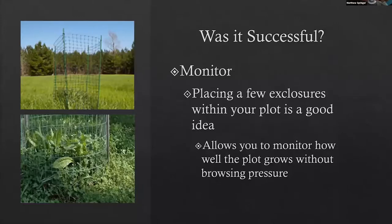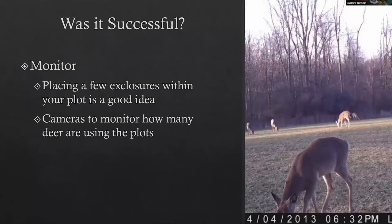How do you determine if your plot was successful? You want to monitor those plots, and the easiest way is through using exclosures, which let you know how much vegetation is actually growing in the plot without being eaten, and also how much is being eaten outside. There's also trail cameras — you really want to pair those with exclosures to get an idea of how many animals are using the field, how many times they come consistently, and how much vegetation is disappearing. You may have a lot of animals using the plot with little difference in the exclosure because your soil is so good that vegetation is keeping up with that pressure.